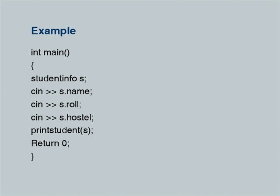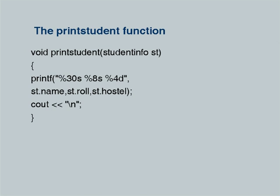To access or refer to components, you always say variable_name dot component_name: `s.name`, `s.roll`, `s.hostel`. However, I can also use the composite `s` — but `cout << s` will not work because cout will not understand what to do with it. This function `print_student(s)` is a function I have to define myself. I can pass a structure as a parameter, but inside the function I should access individual components.